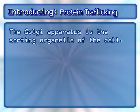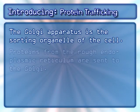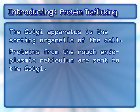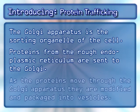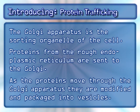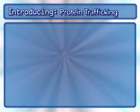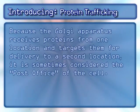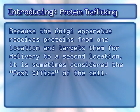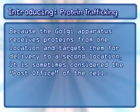The Golgi apparatus is the sorting organelle of the cell. Proteins from the rough endoplasmic reticulum are sent to the Golgi. As the proteins move through the Golgi apparatus, they are modified and packaged into vesicles. Because the Golgi apparatus receives proteins from one location and targets them for delivery to a second location, it is sometimes considered the post office of the cell.